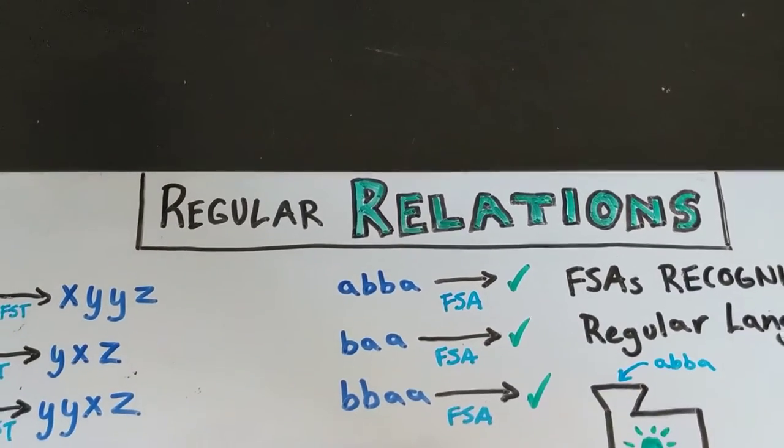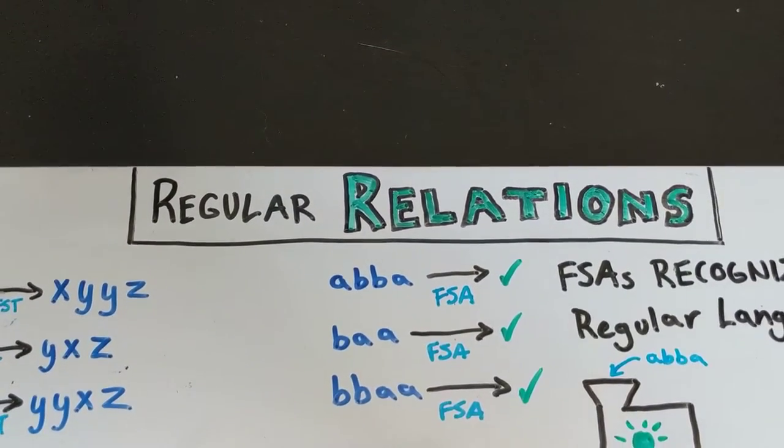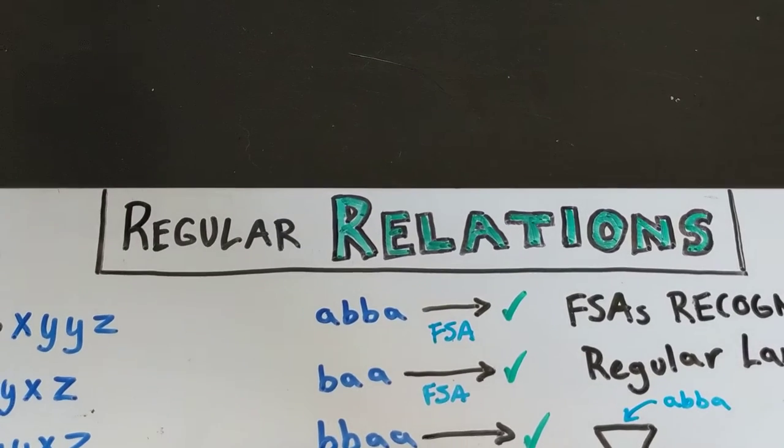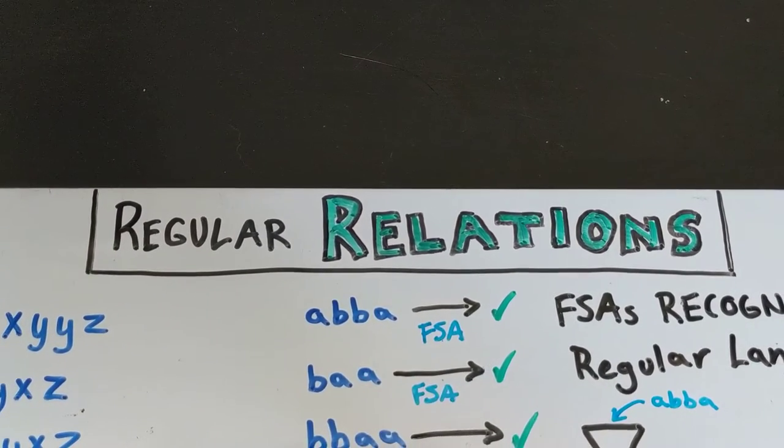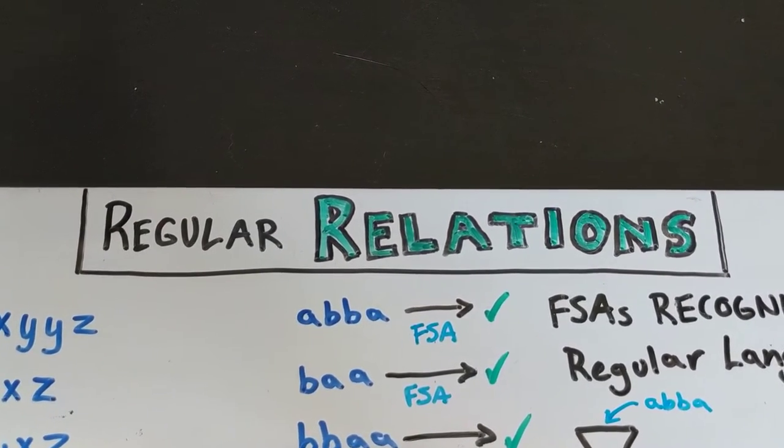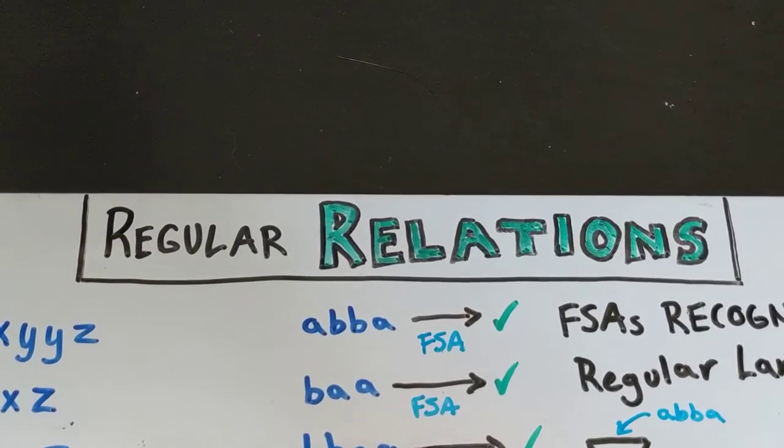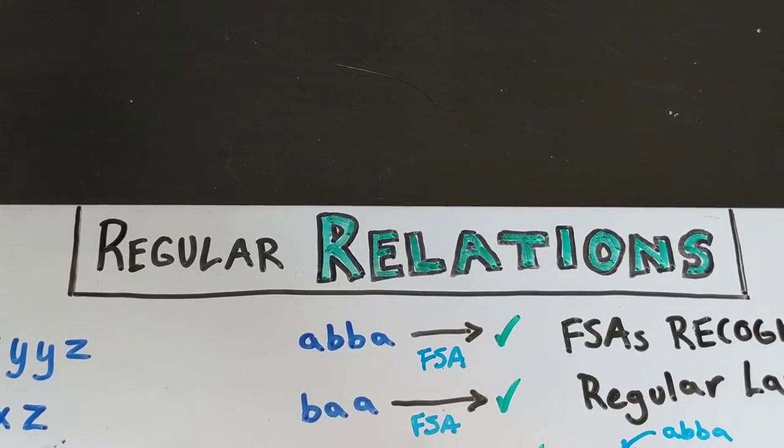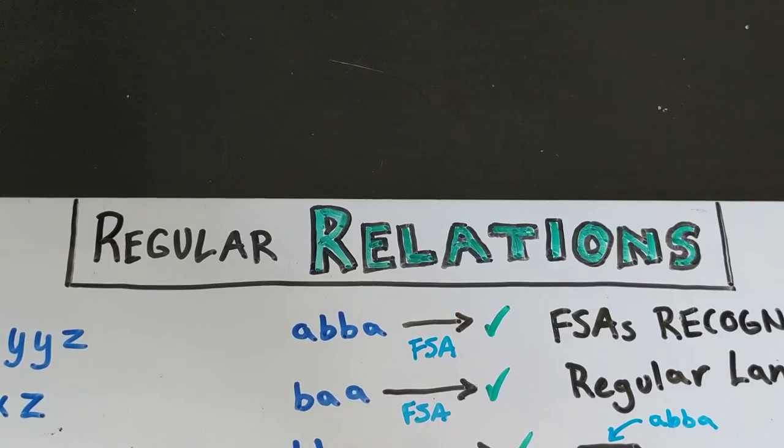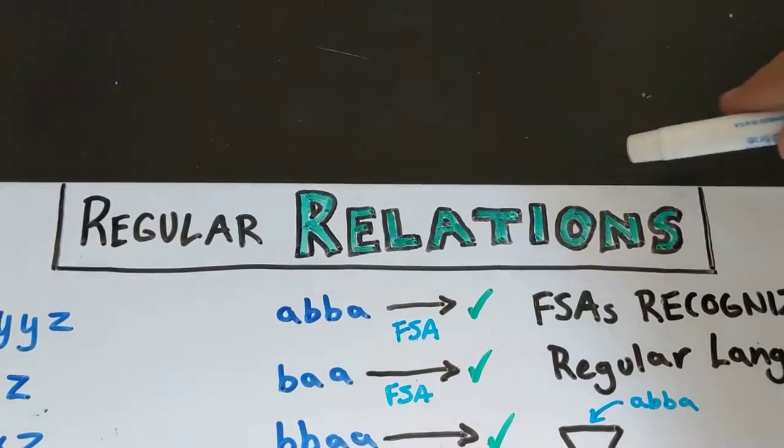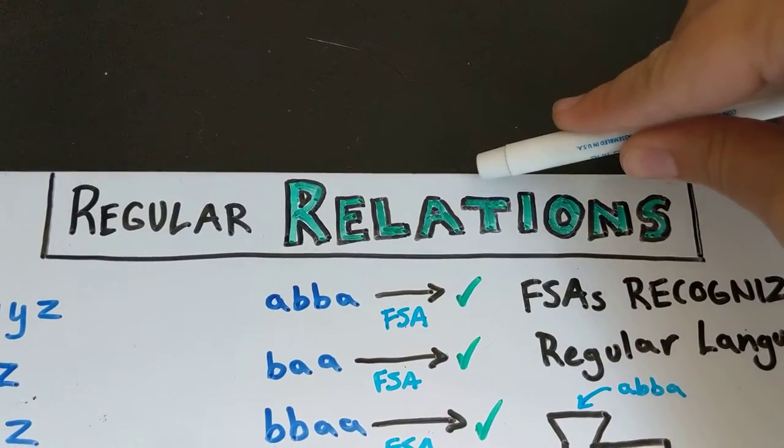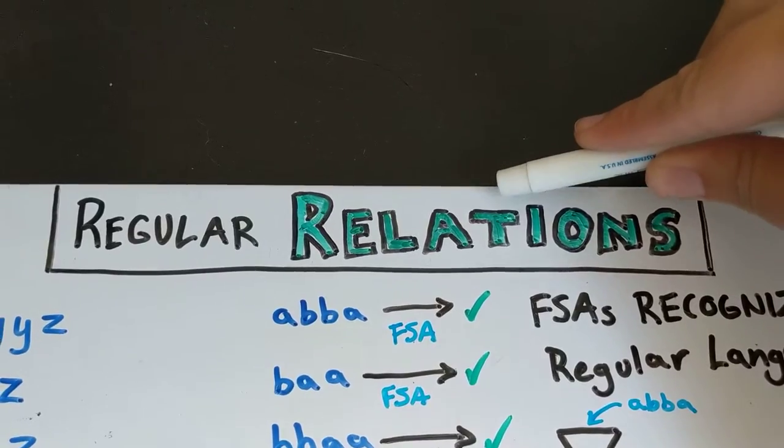Hello and welcome to another lesson about formal language theory. In the last video we introduced this thing called a finite state transducer. In this video we're going to look at how those work in a different way that is going to lead us to this idea of a regular relation at the end.